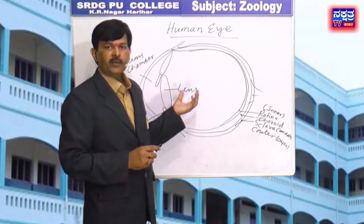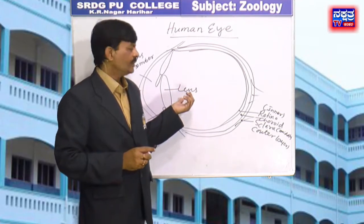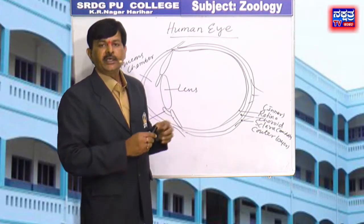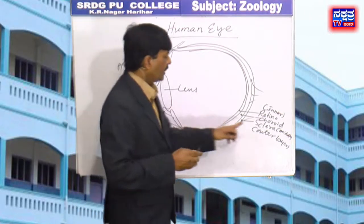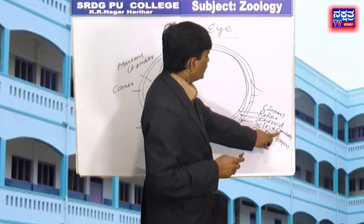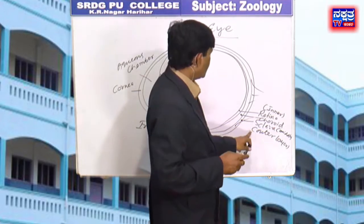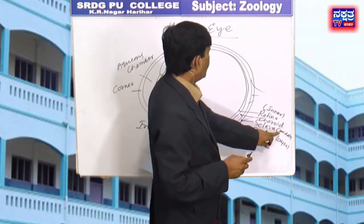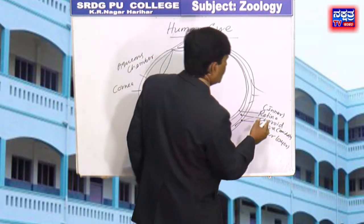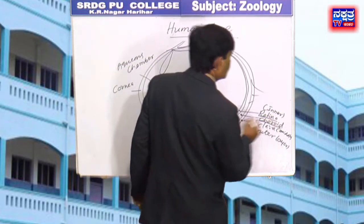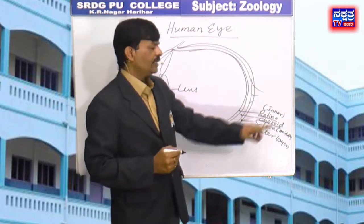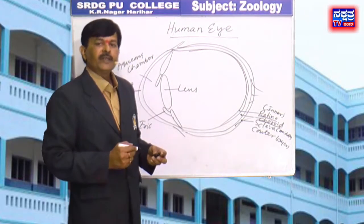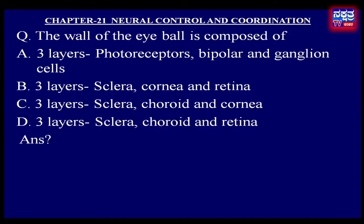In the human eye, the wall of the eyeball is mainly composed of three layers: the outer layer called the sclera, the second layer called the choroid, and the inner layer called the retina. Therefore, in the given options, D — three layers: sclera, choroid and retina — is the right answer.